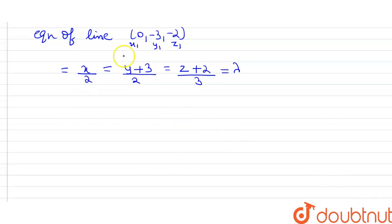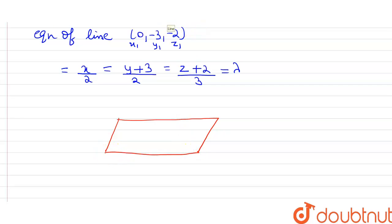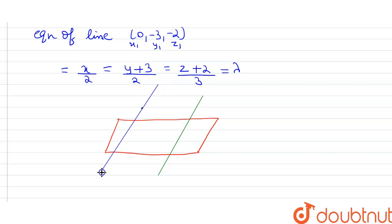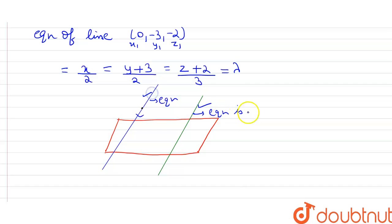So the scenario is: a plane is given to us, and also a line is given to us. Through a point, another line passes which is parallel to this line. We have found the equation of this new line using the given line's equation, because parallel lines have equal direction cosines.